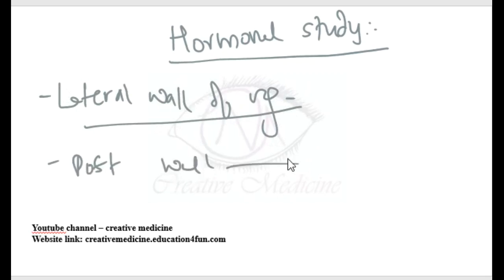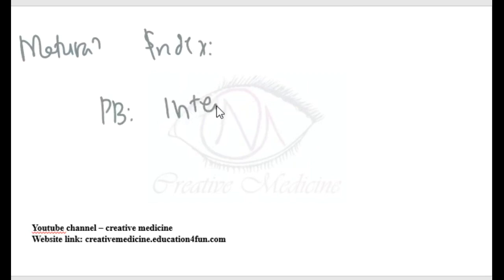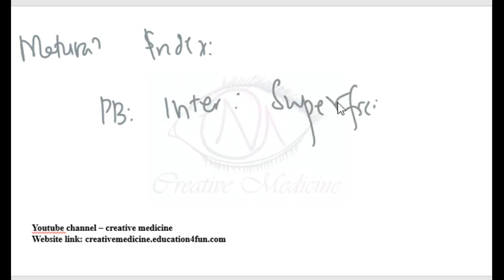There is a maturation index. The maturation index is the ratio of parabasal cells to intermediate cells to superficial cells.